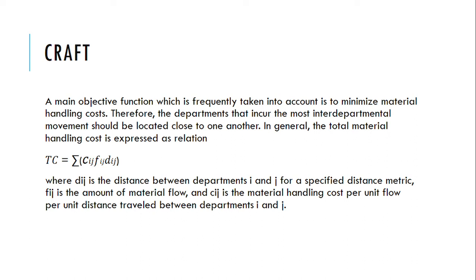In general, the total material handling cost is expressed as: TC = summation of C_ij × F_ij × D_ij, where D_ij is the distance between departments i and j for the specified distance metric, F_ij is the amount of material flow, and C_ij is the material handling cost per unit distance traveled between departments i and j.